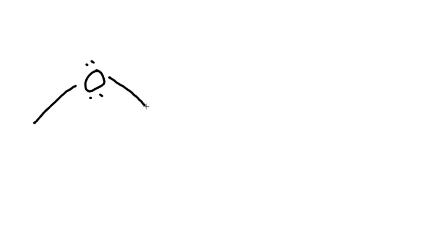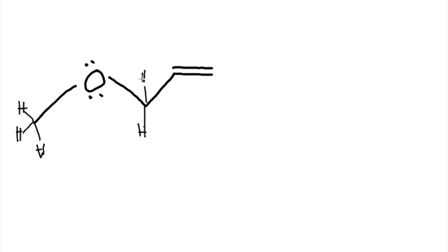Let's see the next example. If you have a structure right here, we have to determine how many Sigma and Pi bonds there are. Before we count, we've got to draw out the pairs of hydrogens connected to these carbons: a hydrogen over here, another hydrogen, and another hydrogen, and two hydrogens here, and two hydrogens here. We also have one hydrogen here.